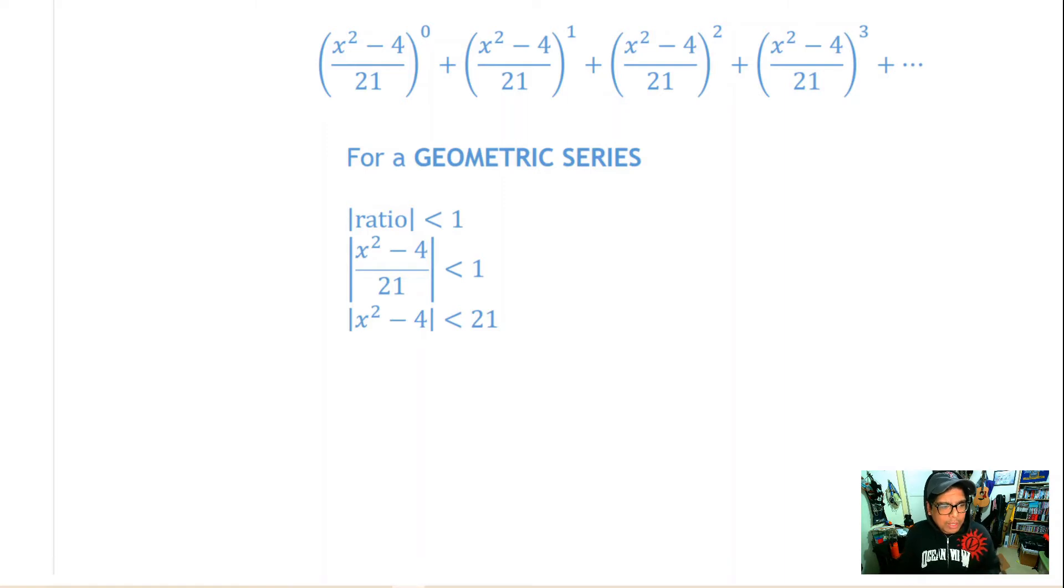Now solving this one you're probably better off rather than using the conjunction statement, it's probably better to look at this as an AND and just solve these two statements. Our first level of solving we're going to add 4. That gets us that x² has to be greater than -17, and also x² has to be less than 25.